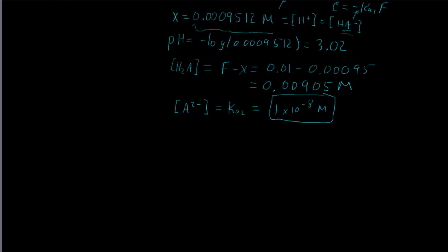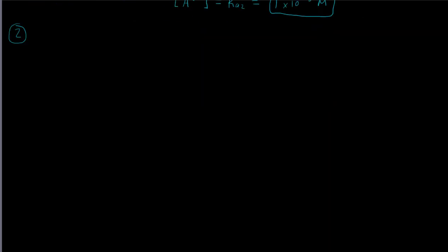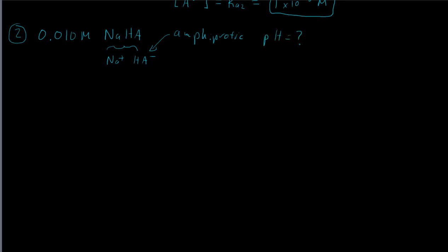Now let's do a different type of problem: finding the pH of a 0.010 molar sodium HA solution. Dissolving NaHA gives sodium cations and HA- in water. The HA- is an amphiprotic species, and we want to find the pH as well as the concentrations of all important species.